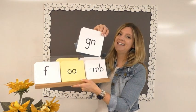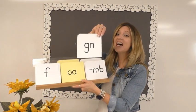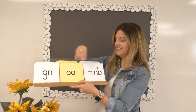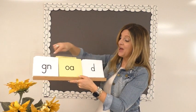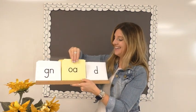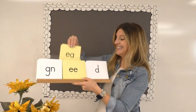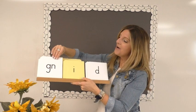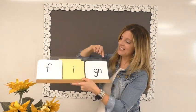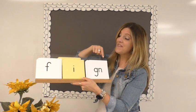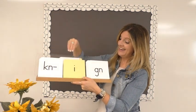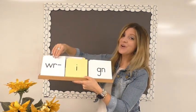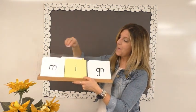Now we're going to do the G-N digraph. This sound is 'n' and it can be at the beginning or at the end. Let's try a few: node, need, nid. Now let's put it at the end — it still says 'n.' This would be fin, nine, rin, or min.